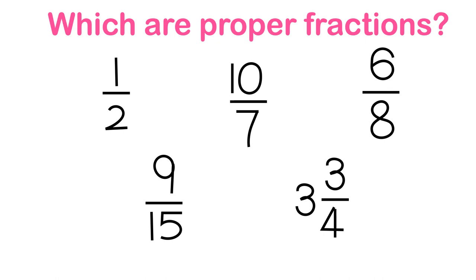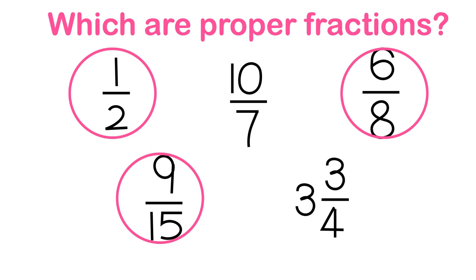Which are proper fractions? 1 half is a proper fraction because 1 is smaller than 2. 6 over 8 is a proper fraction because 6 is smaller than 8. 9 over 15 is a proper fraction because 9 is smaller than 15.